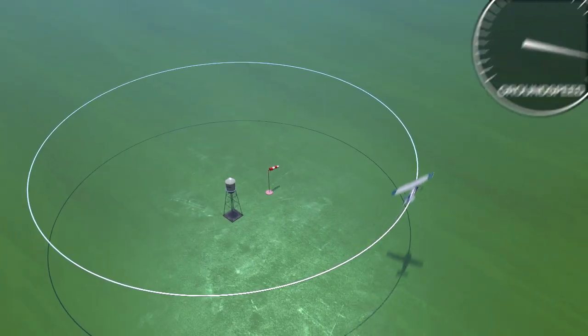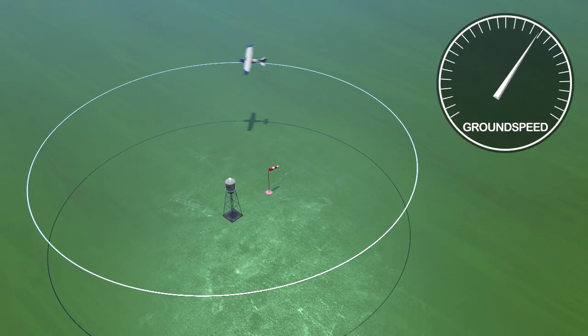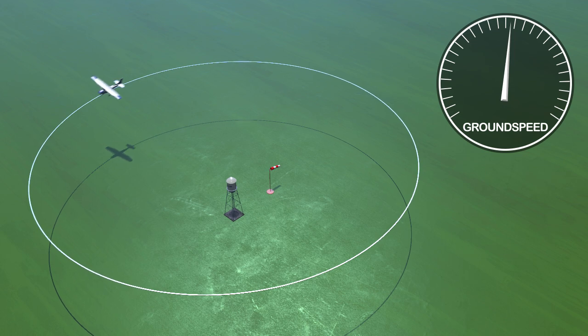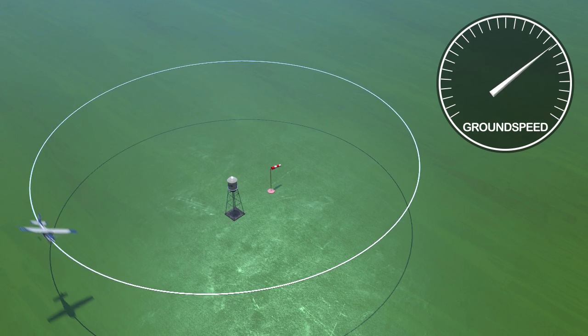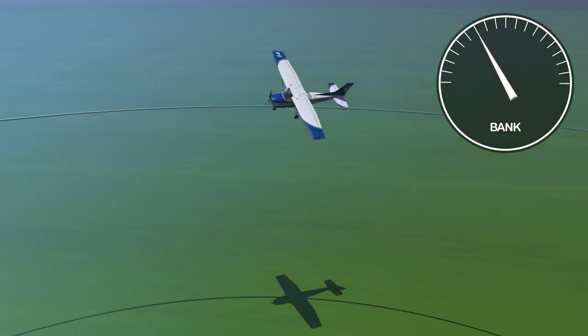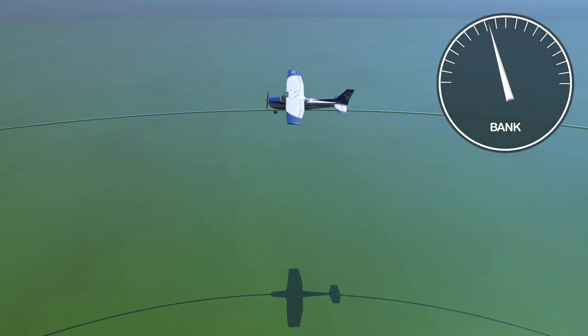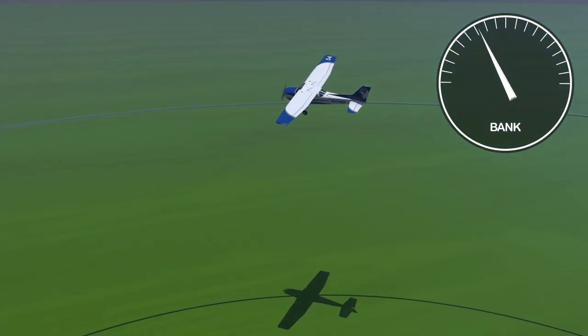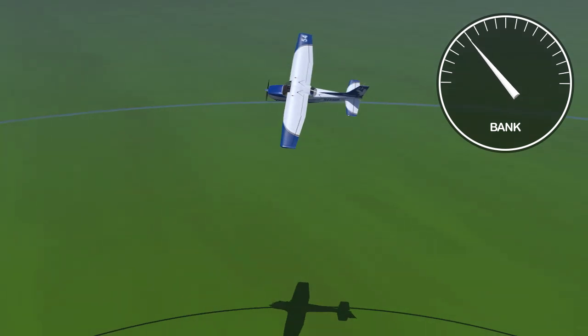Similar to the other ground reference maneuvers, the airplane's ground speed will constantly be changing as it transitions between tailwinds, crosswinds, and headwinds. These different relative winds will require a constantly changing angle of bank as well as various amounts of crabbing to maintain that constant radius.